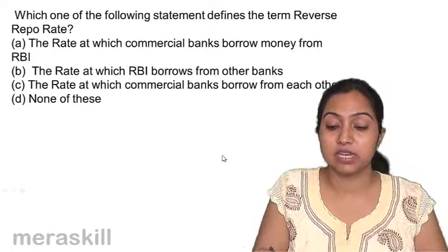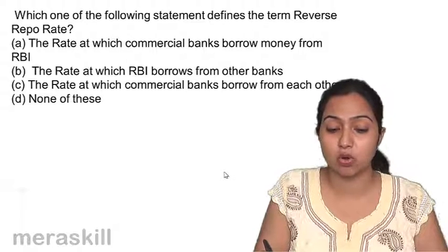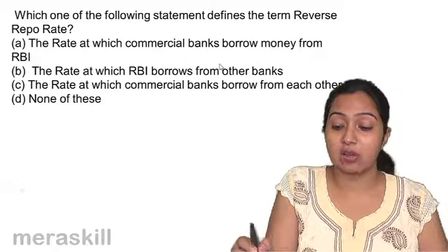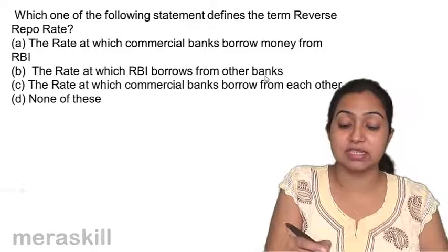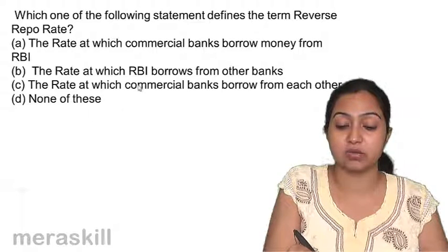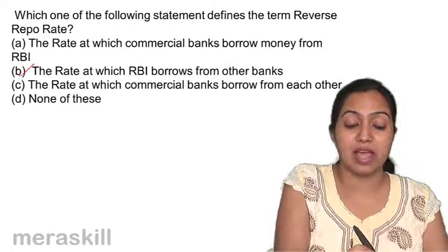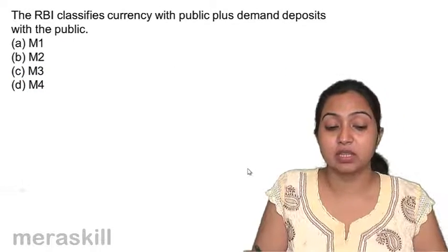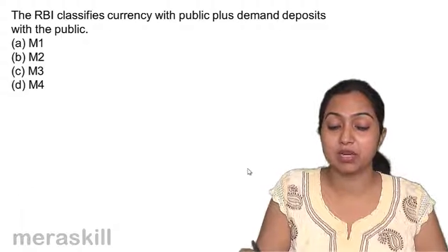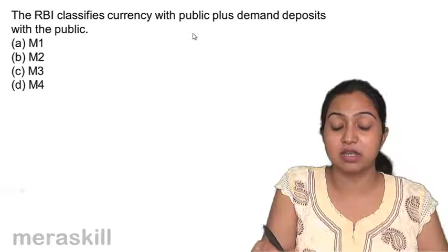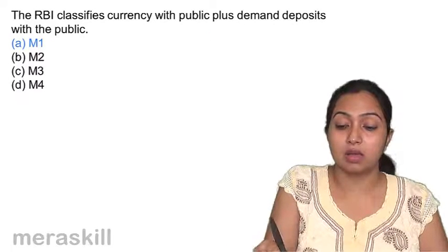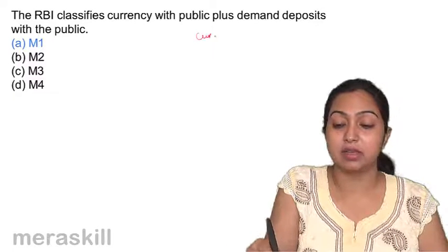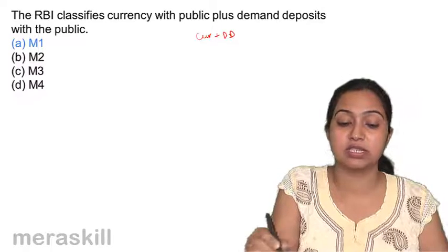Which statement defines the reverse repo rate? The rate at which RBI borrows from commercial banks is the reverse repo rate — RBI borrows and says it will repurchase. The RBI classifies currency with the public plus demand deposits, which we had learnt when studying money. Currency plus demand deposits equals M1.